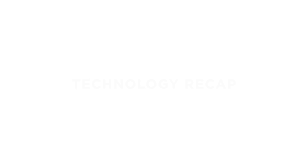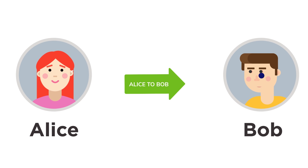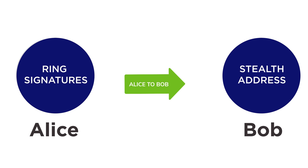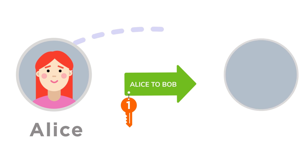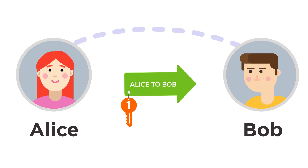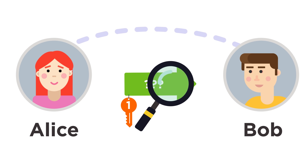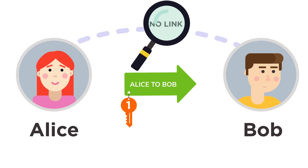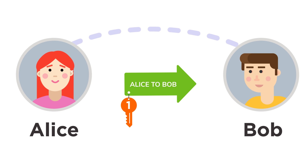In our last video, we illustrated how Monero's stealth addresses prevent outputs from being associated with the recipient's public address. This is accomplished by the use of one-time destination public keys. One-time public keys are only spendable by the recipient, and only the recipient is able to detect their designated output on the blockchain. Since all outputs are unlinkable, the privacy of the recipient is ensured.